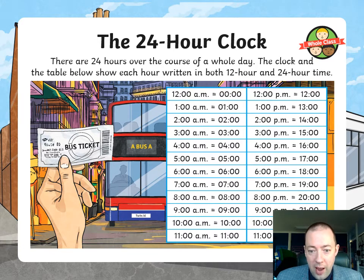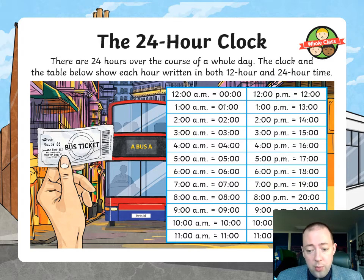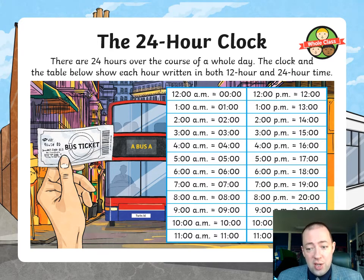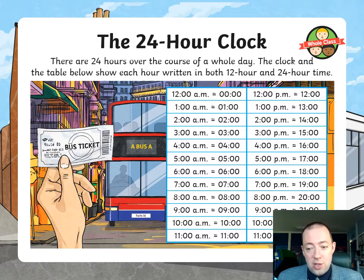2 a.m. is 0200. That goes all the way through until midday — you've got 1200. And then, instead of 1 o'clock in the afternoon, we have 1300, 1400, 1500, etc., all the way until we're back to 0000 at midnight.